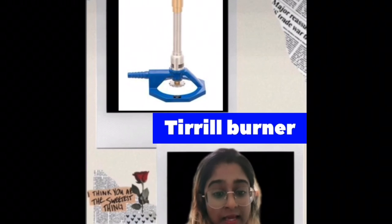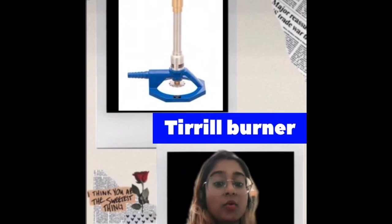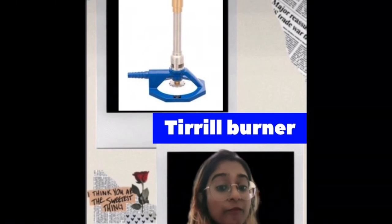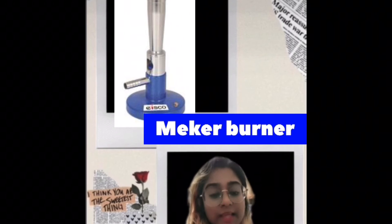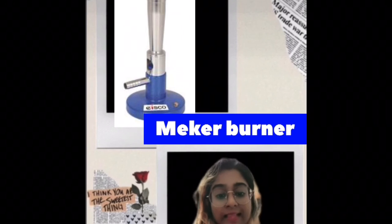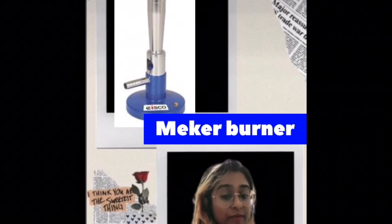The second one is known as a Tyrell burner. It is a subtype of a Bunsen burner that features a wing nut at the bottom of the tube for gas adjustment. And thirdly is known as a Meker burner, which is a radical subtype of Bunsen burner that is designed to produce extremely hot and stable flame.